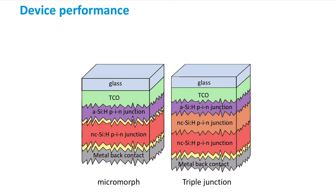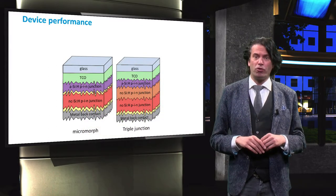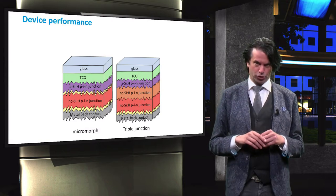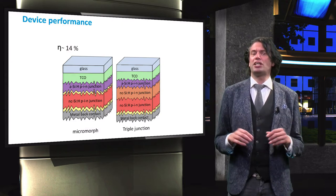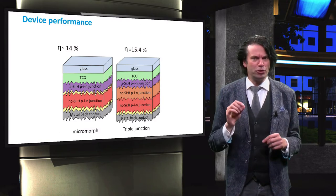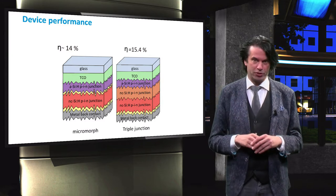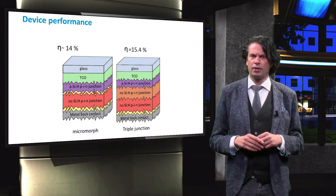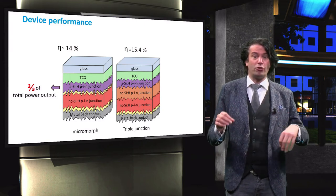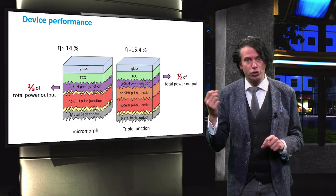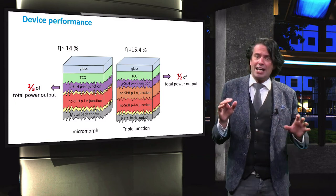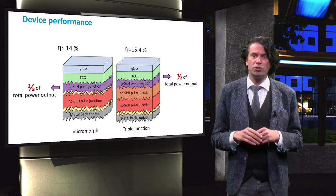What does this mean for the performance of multi-junction devices containing amorphous silicon absorber layers? Shown here are a micromorph tandem cell and a triple junction solar cell with an amorphous silicon PIN junction on top of two nanocrystalline silicon PIN junctions. The initial efficiency of the tandem cell is about 14 percent, while the initial efficiency of the triple junction cell is about 15.4 percent. In both devices, the amorphous silicon junction has a large share in the total power output — about two-thirds in the tandem cell and about half in the triple junction device. It is therefore no surprise that as the amorphous silicon layer degrades, the performance of the device suffers.